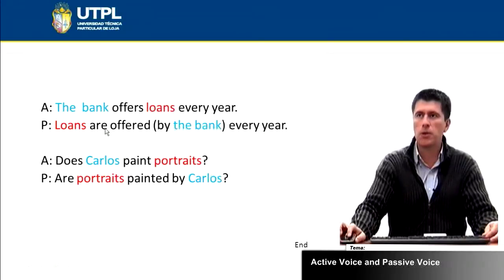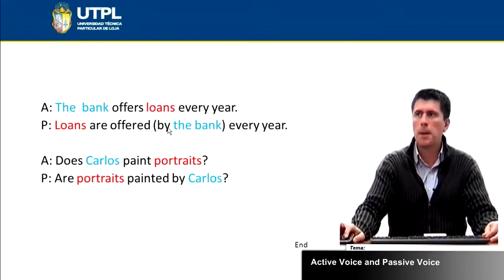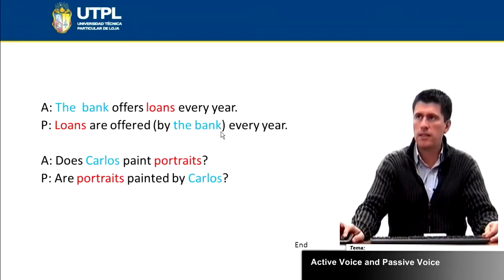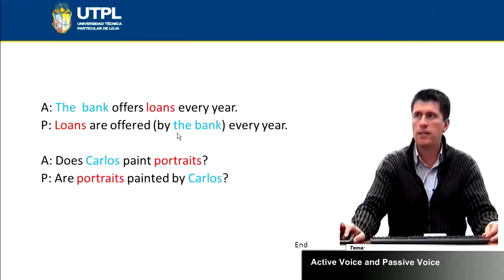As you can see, we're using the structure verb be plus the verb in the past participle, followed by by the bank. Again, this is written in parenthesis because it is optional — you would include it if you want to mention the doer of the action.